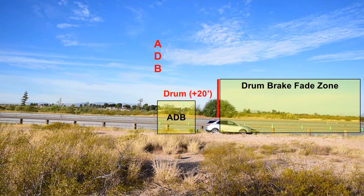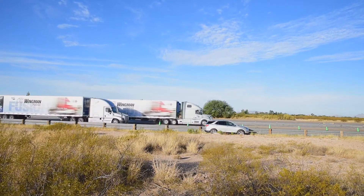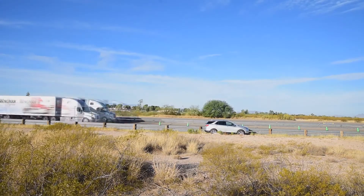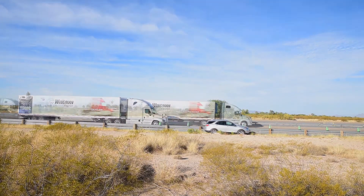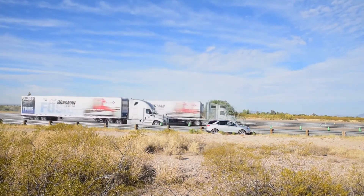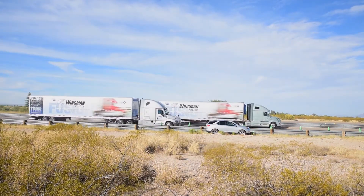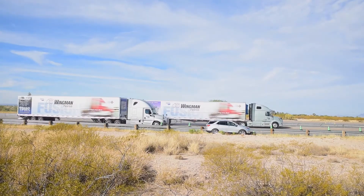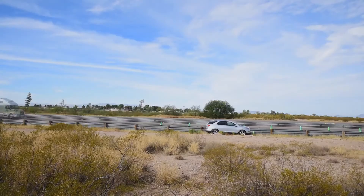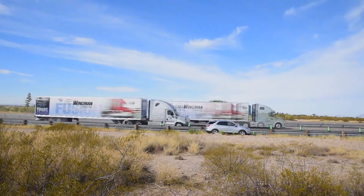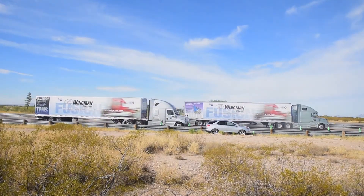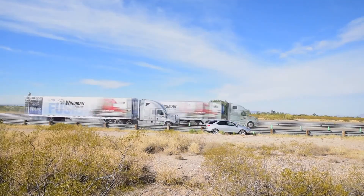As you'll notice, the ADB vehicle will always be parked behind the parked car. The drum vehicle brakes are starting to heat up and fading is starting to set in, providing longer and longer stopping distances. After a couple of stops, the whole tractor is starting to get past the car. Notice how contained the ADB vehicle is at staying within that 10-foot zone, never coming in contact with our parked car.